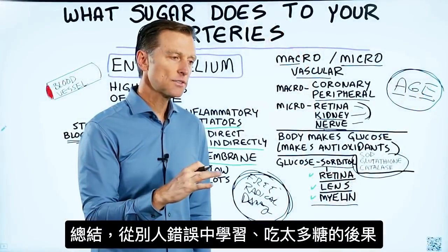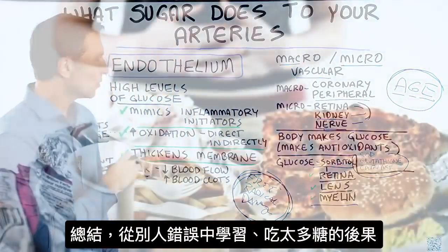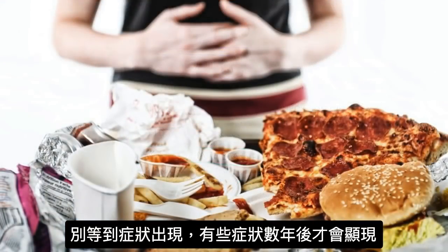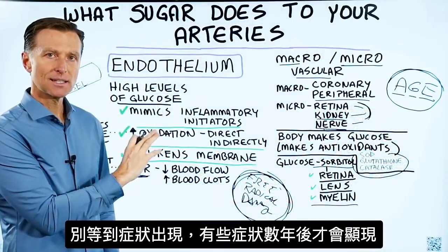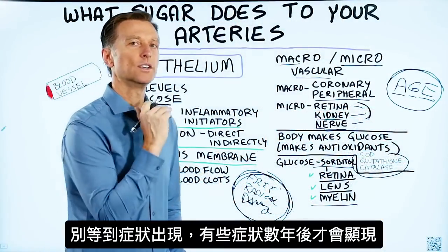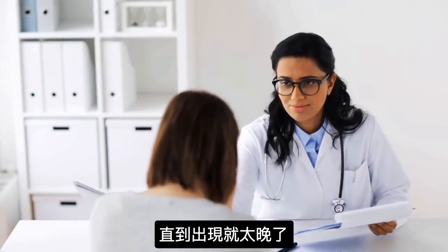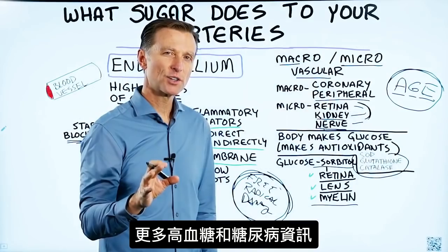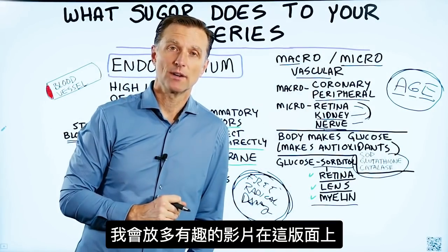In summary, learn from the mistakes of others. Understand what happens to your body when you eat too much sugar, and don't wait for these conditions to develop — because many of the symptoms don't show up for years until it may be too late. For more information on blood sugars and diabetes, check out the videos linked here.